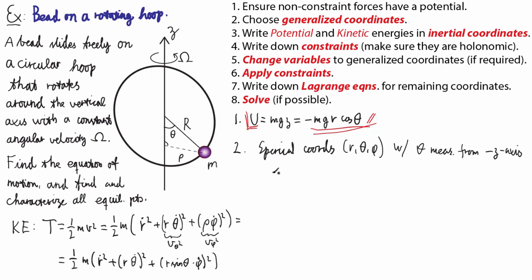So that was step three. Now we need to write down the constraints. There are two constraints. This bead can only move in one direction — it can move back and forth along the hoop. But we have three spherical coordinates, so if we want to reduce the number of coordinates to one, we need two constraints.